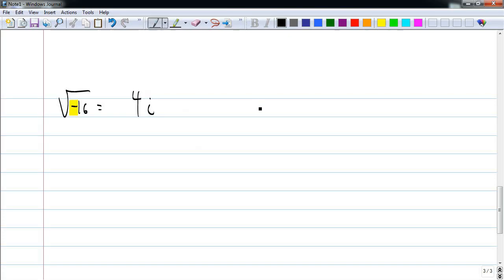If we try something like negative square root of negative 9, that negative on the outside, nothing happens to it. The negative on the inside, I take out as i. And what is the square root of 9? It is 3.